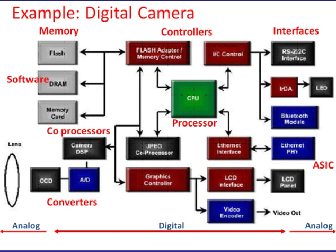Digital cameras are an example of embedded systems — single function, always-on, tightly constrained, low cost, low power, small, fast, reactive, and real-time to a small extent. They use analog components and sensors. A CCD (charge-coupled device) is a special sensor that captures an image.